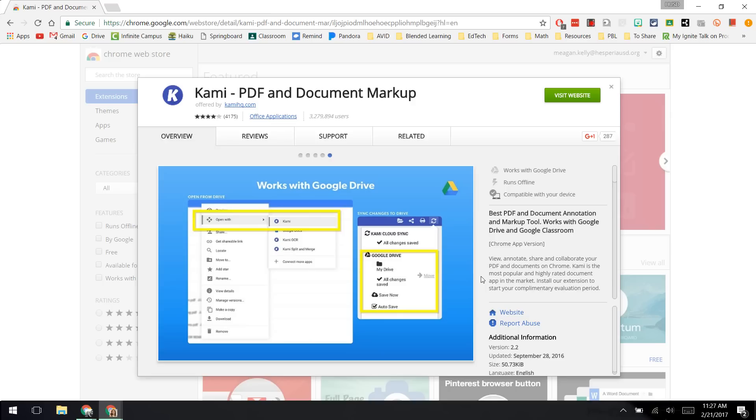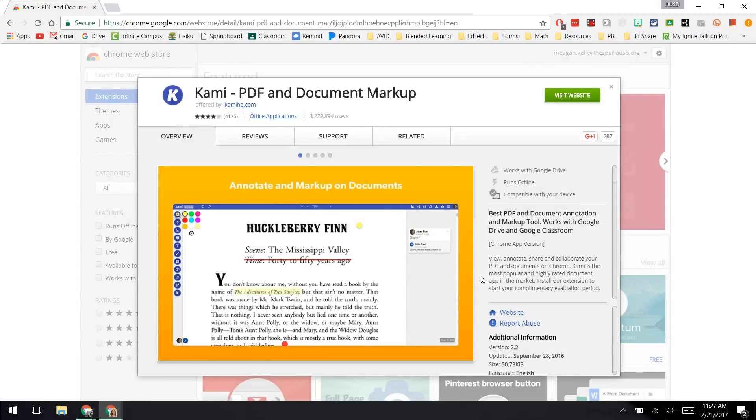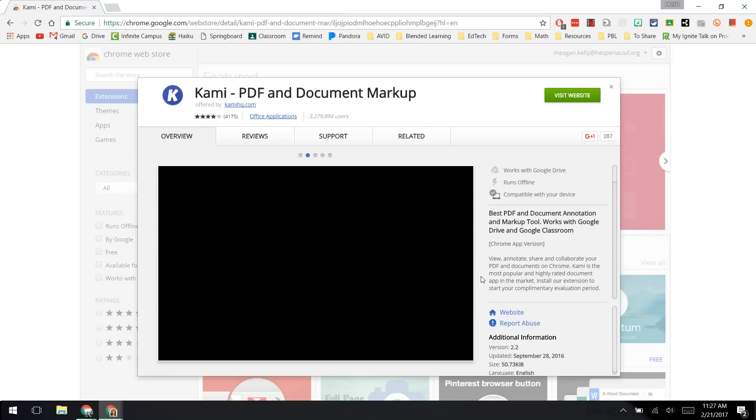Hi everyone! In this video I'm going to be walking you through how to use the application Kami, which is a free PDF and document markup tool that can be used on the Chrome browser to view, annotate, share, or collaborate on PDFs and documents.